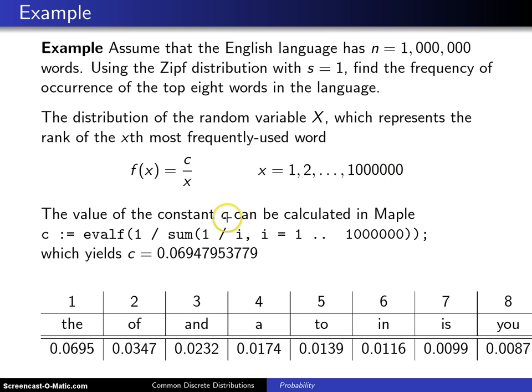The value of the constant c can be calculated in Maple with the following statement: c equals the floating point evaluation of one divided by the sum of one over i as i goes from one up to a million, and that will yield a c value of 0.069479. Well,